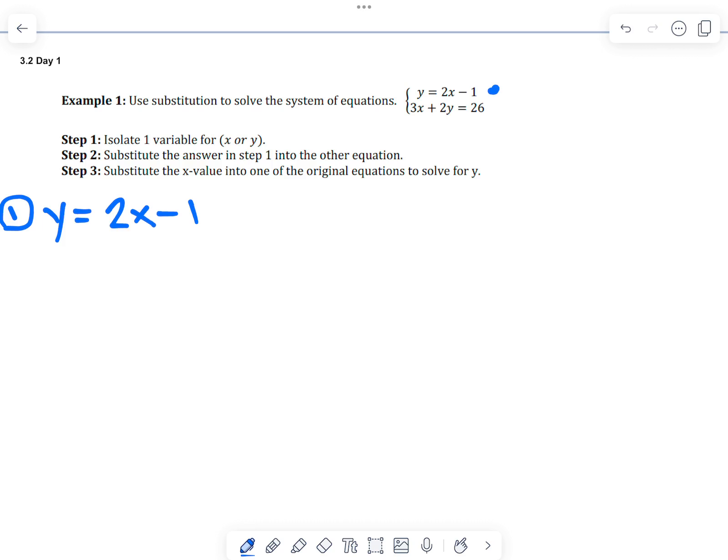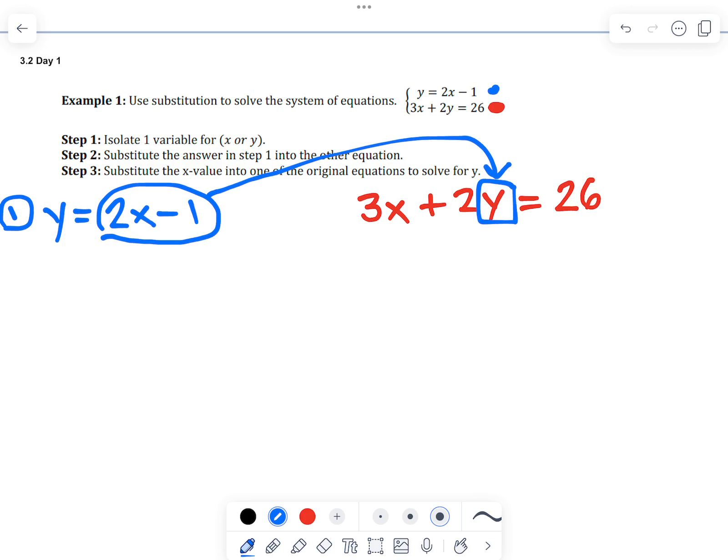Step two is to substitute the answer into the other equation. So the other equation, the bottom equation, we're going to substitute. So I'm going to write that in red. And we're going to take this 2x minus 1 and substitute it into the red equation for y. So here's what it's going to look like.